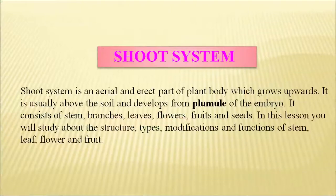Welcome to NIOS students. Today we shall be studying biology and we shall be focusing on shoot system. The shoot system is the aerial and erect part of the plant body which grows upwards, and it is usually above the soil and it develops from the plumule part of the embryo.